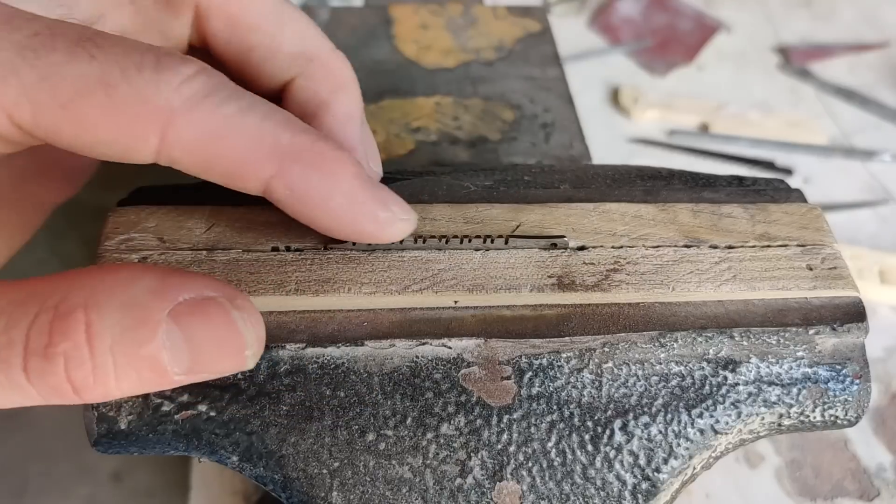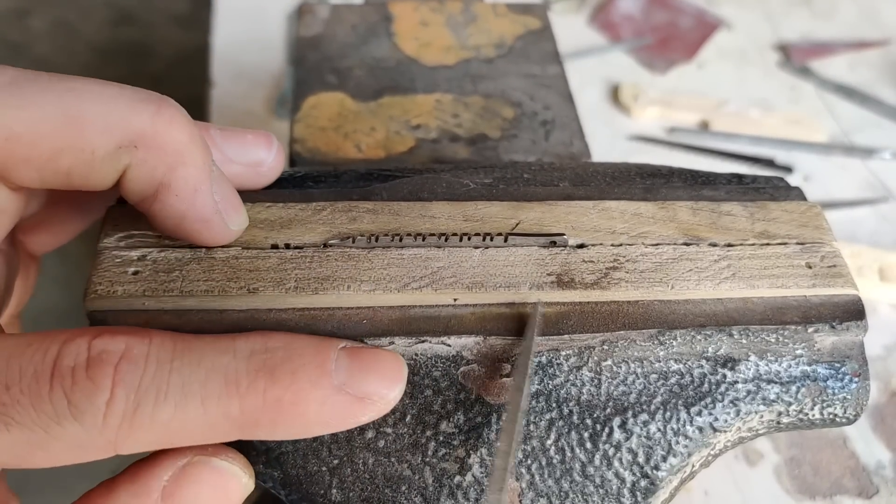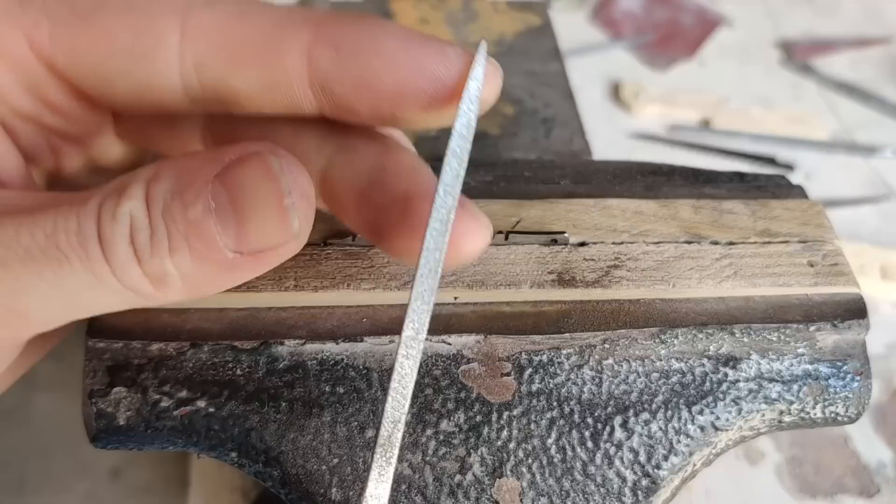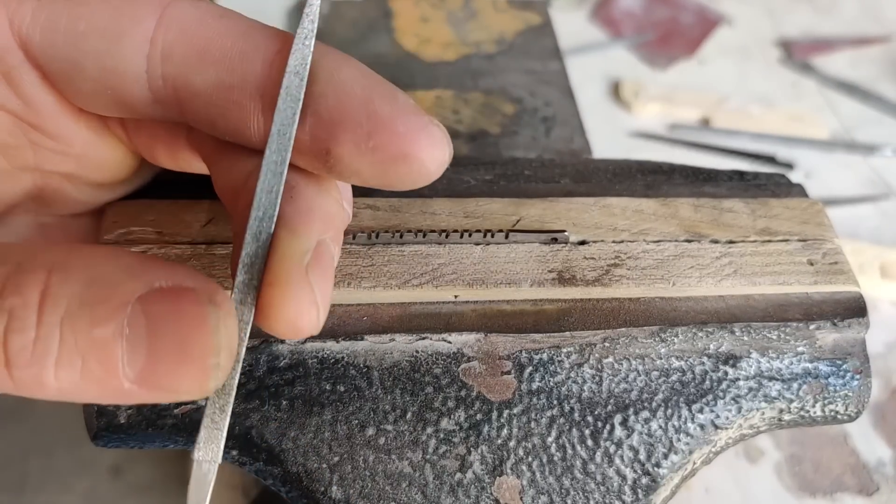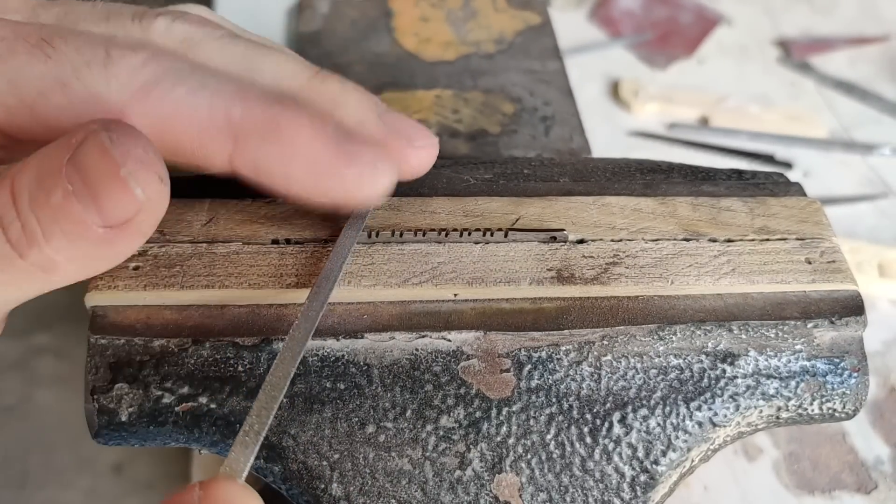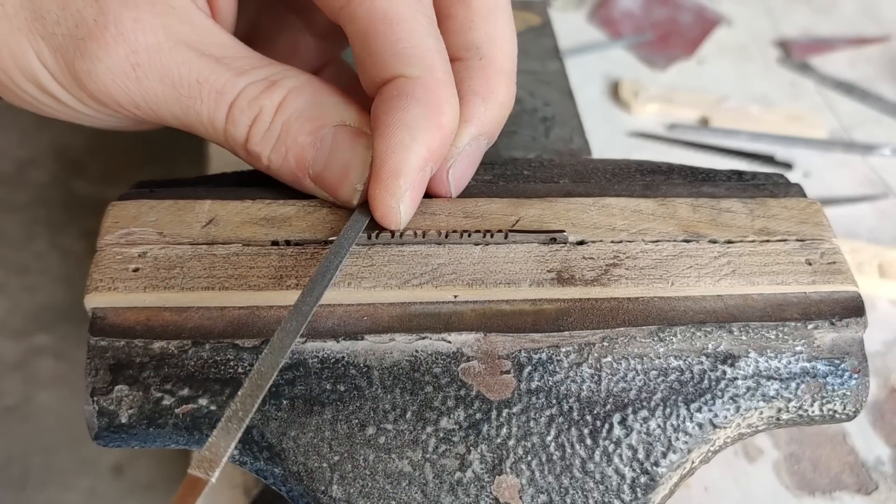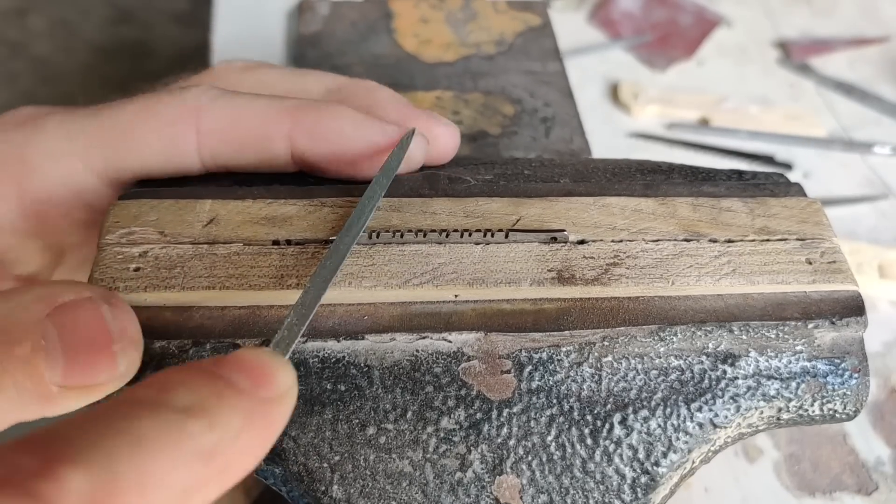Alright, so you can see I've made cuts in both directions. And I'm going to use this diamond file. And just basically along the cuts that I made, kind of at an angle, begin filing.